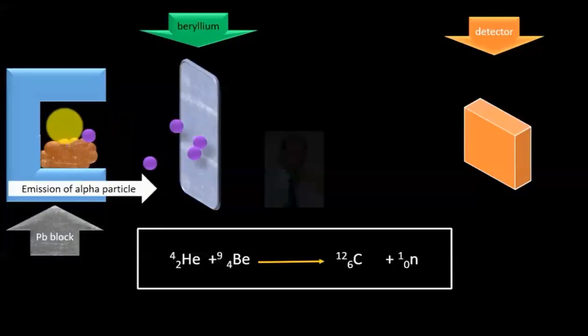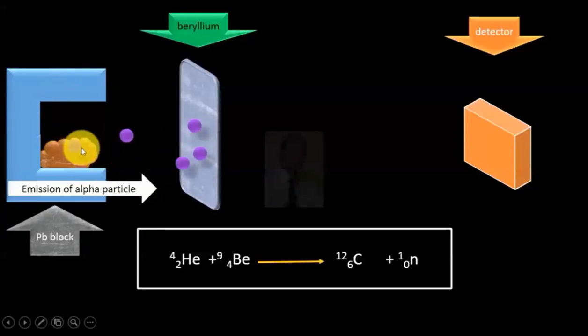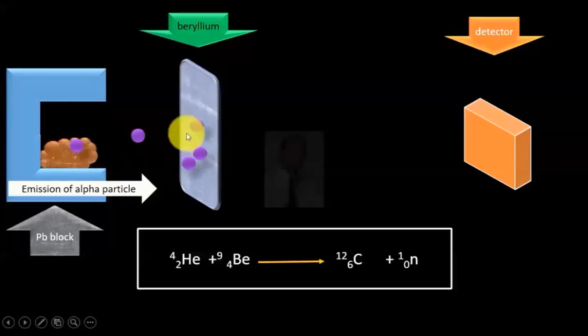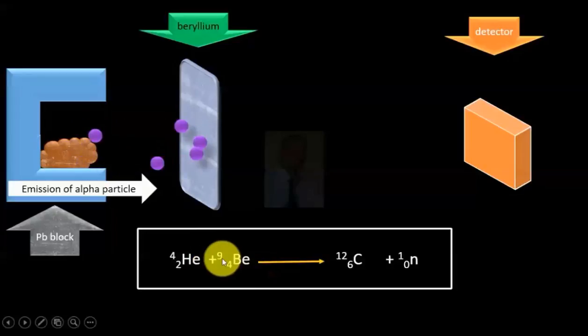It releases alpha particles, which are positively charged, towards beryllium metal which is placed in front of it. Beryllium metal, when hit by alpha particle, gets transformed into carbon-12 with the release of one neutron.